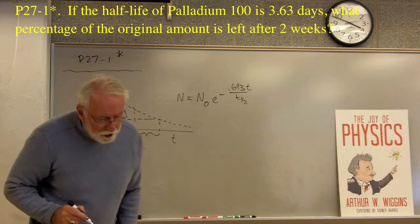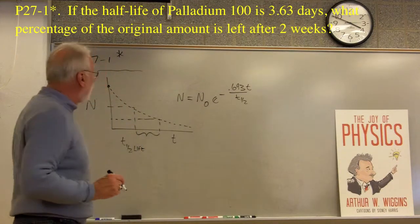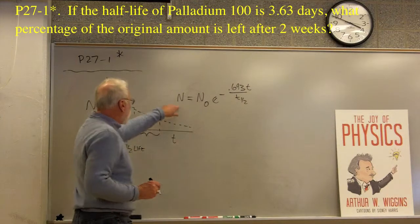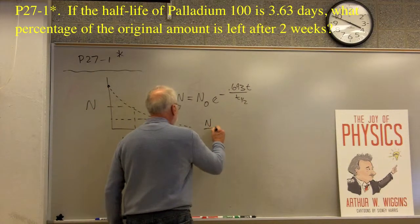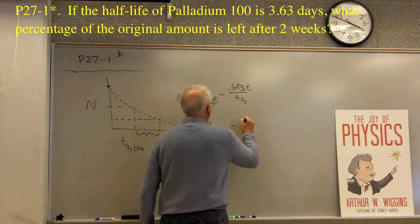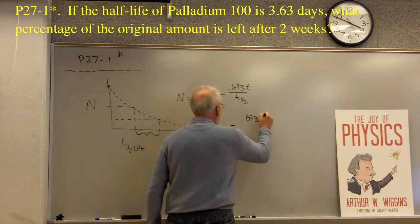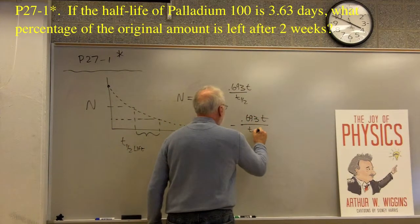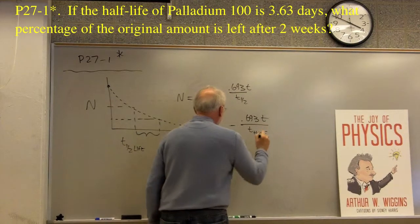So then, what is the problem one? It says, what percentage of the original amount is left after two weeks? Well, we can find the percentage just by taking N over N0, and so that means just e to the minus 0.693t divided by t of the half-life, like so.